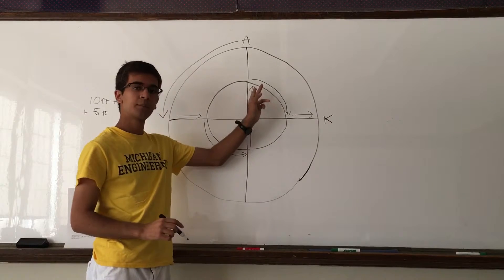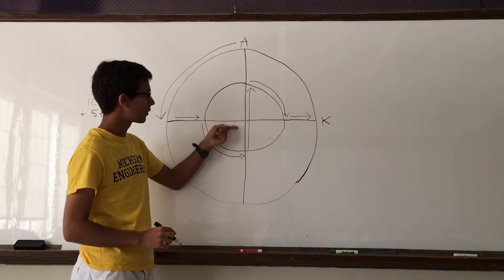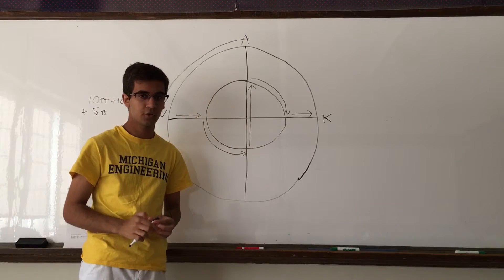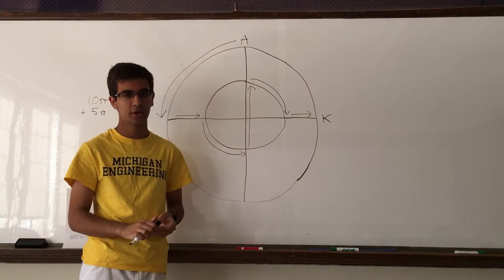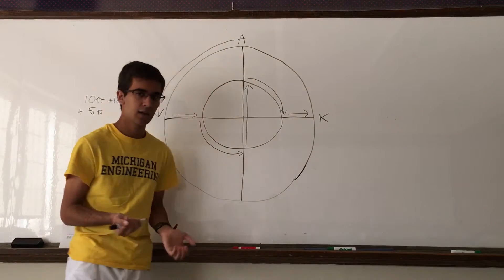Now we look at this section. In this path, the arrow goes across the diameter of the inner circle. If the radius of the inner circle is 10 meters, the total diameter must be 20. So we add 20.